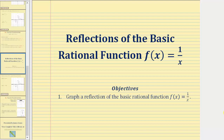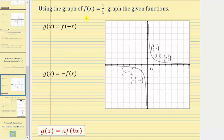Welcome to a lesson on how to graph the reflection of the basic rational function f of x equals one divided by x. Here we're asked to use the graph of f of x equals one divided by x, which is graphed here in gray, to graph g of x equals f of negative x, and g of x equals negative f of x, or the opposite of f of x.